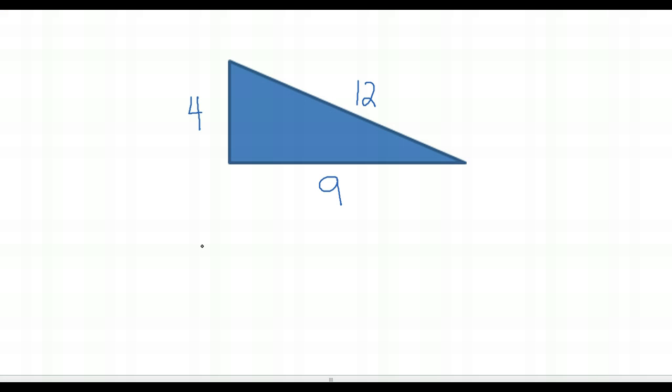Let's say we've got a triangle with sides 4, 9, and 12. If I want to see if that's a right triangle, I need to check if 4 squared plus 9 squared equals 12 squared. 4 squared is 16, 9 squared is 81, and 12 squared is 144. 16 plus 81 does not equal 144, so this is not a right triangle.